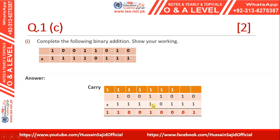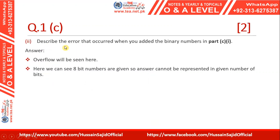Continuing the binary addition: when we have three ones, we get one with a carry of one. That carry plus one gives zero with another carry of one. One plus one gives zero and one is carried. Again three ones give one with a carry. Finally, that last carry produces the result. We were given two 8-bit numbers but the answer is a 9-bit number.